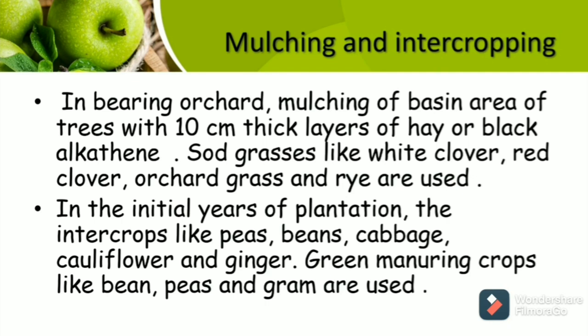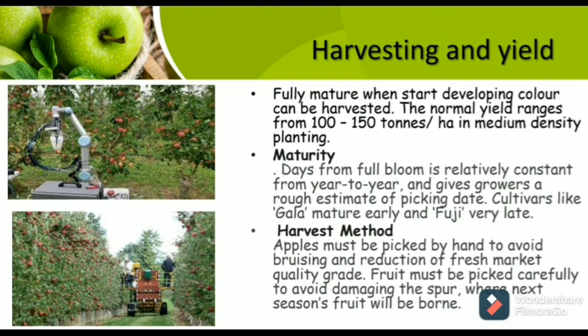Regarding harvesting and yield: Fully matured trees when fruits start developing colour can be harvested. The normal yield ranges from 100 to 150 tons per hectare in medium-density planting. Maturity days from full bloom is relatively constant from year to year and gives growers a rough estimate of picking date. Cultivars like Gala mature early and Fuji matures very late. Maturity indices help farmers estimate when the fruit will mature. Apples must be hand-picked to avoid bruising and reduction of fresh market quality grade. Fruit must be picked carefully to avoid damaging the spur on which the next season's fruit will be borne.